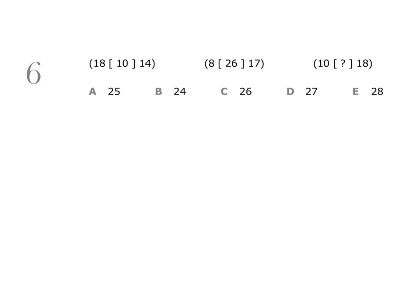Question 6: 18, 10, 14; 8, 26, 17; 10, missing number, 18. The three numbers in each group are related in the same way, and we need to find the number that completes the last group.